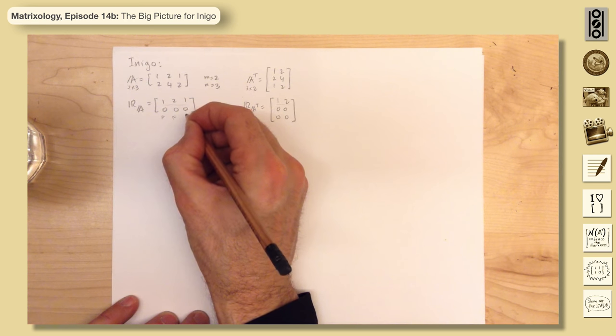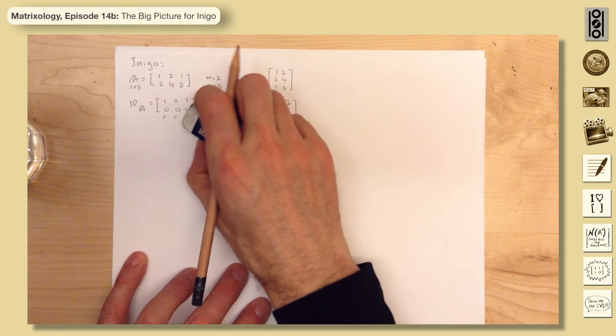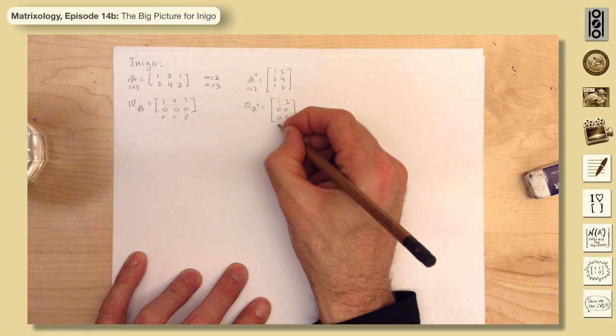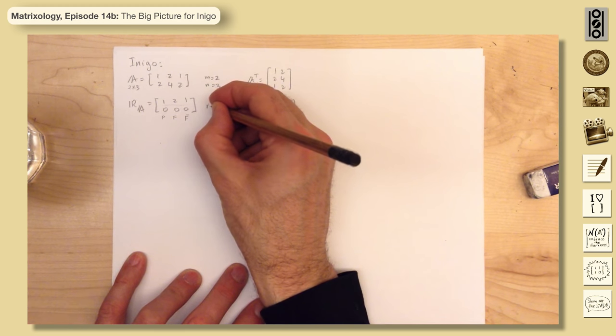Pivot, free, pivot, pivot, free, pivot, free, and free, and there's a pivot and a free over here, so R equals 1.